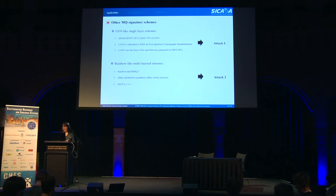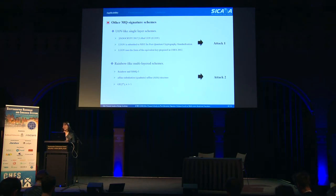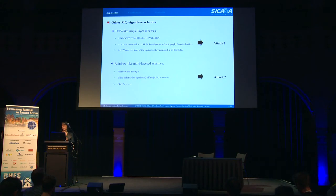Our attack can apply to other MQ signature schemes. First, LUOV, which was submitted to NIST, uses chess form, so it can be applied to our proposed Attack 1. Rainbow and HMFEv, which use an ASA structure and are computed over GF(2^N), are also vulnerable to our Attack 2.